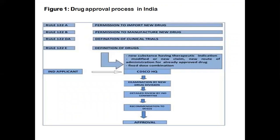This is a flowchart for the drug approval process in India. Rule 122A covers permission to import a new drug. Rule 122B covers permission to manufacture a new drug. Rule 122DA provides the definition of clinical trials. Rule 122E provides the definition of drugs — including new substances having therapeutic indications, modified or new claims, new routes of administration for already approved drugs, and fixed dose combinations. These are considered new drugs for which approval is required.